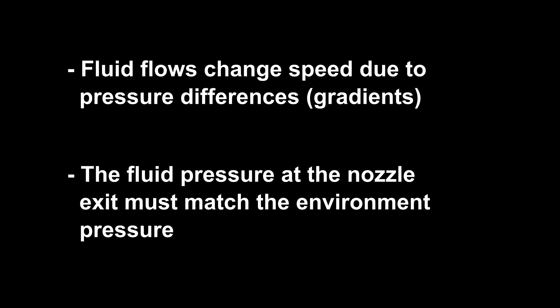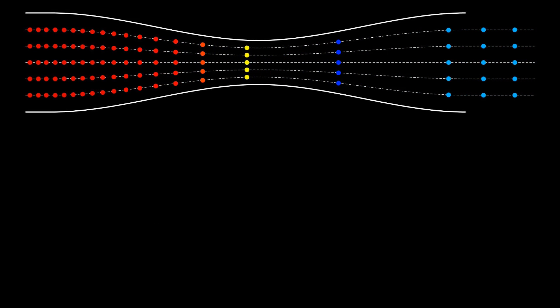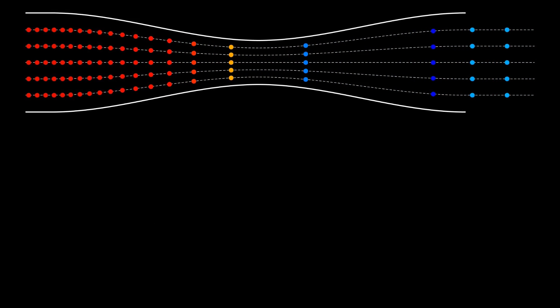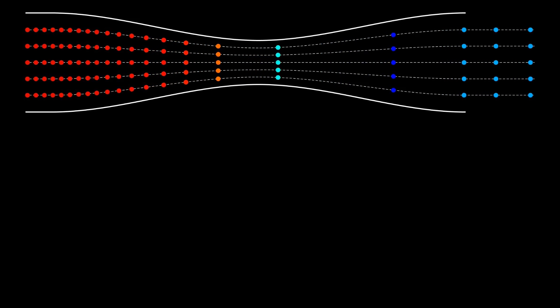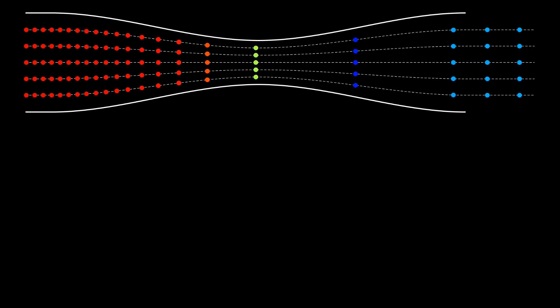Secondly, the fluid pressure at the nozzle exit must match the environment pressure. This is a fundamental truth like conservation of mass and conservation of energy. The pressure in the nozzle can be lower or higher than the atmospheric pressure at the exit, but then there will be shock waves or expansion fans to enforce pressure equality.